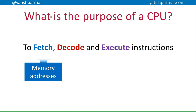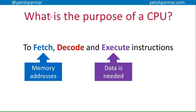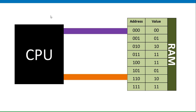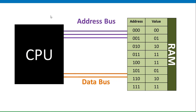What does fetch entail? We need to get data from some form of memory address — data or instruction — and the binary is going to travel down the bus. In order to execute instructions we need data. So we've got the CPU on one side, and the RAM on the other side, which contains the programs and data currently in use. We have two buses concerned with in this video: the address bus and the data bus.